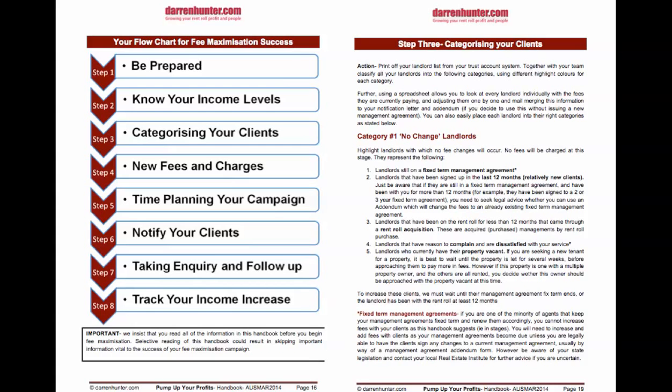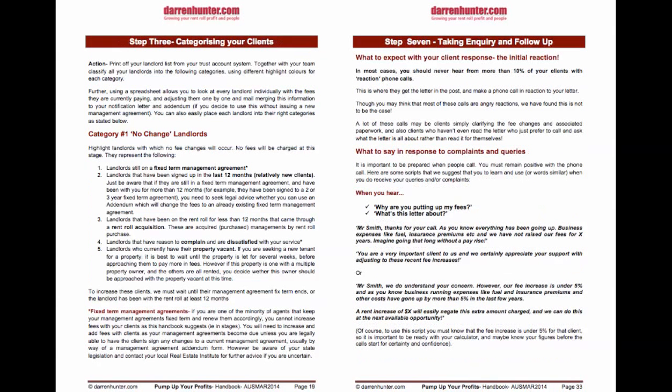The three categories are: category one, the landlords that won't change at the moment and for what reasons; category two, landlords with one or two properties; and category three, multiple landlords. We'll teach you how every category must be treated differently.